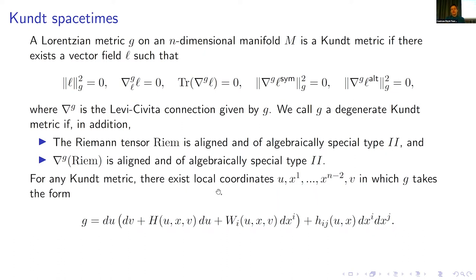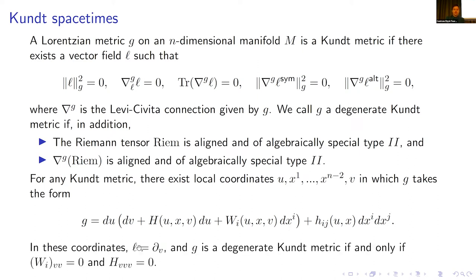For any Kundt metric there exist local coordinates u, x1 to x_{n-2}, and v, in which G takes this nice form here. So h, w_i, and h_{ij} are functions. They depend on everything except h_{ij}, which doesn't depend on v. So all Kundt metrics are locally of this form. In these coordinates, the vector field L can be written as ∂_v, and G is a degenerate Kundt metric if and only if ∂_v w_i = 0 for every i from 1 to n-2, and ∂_v h = 0.